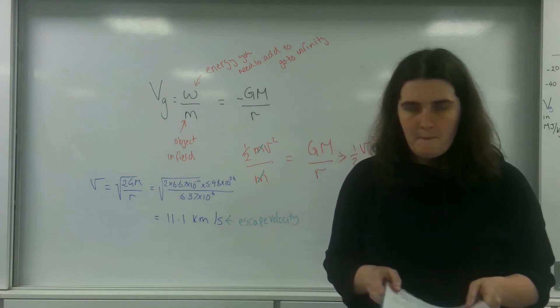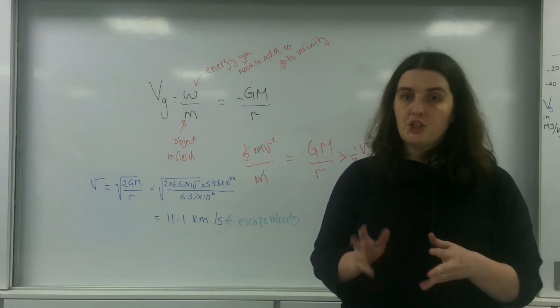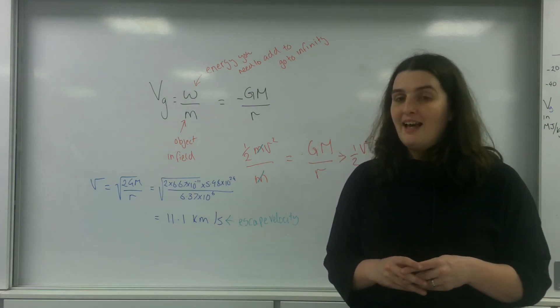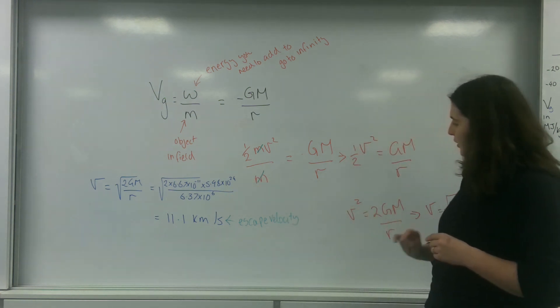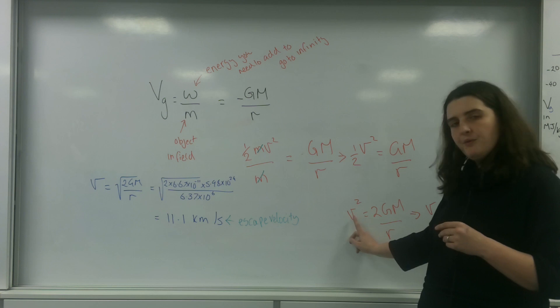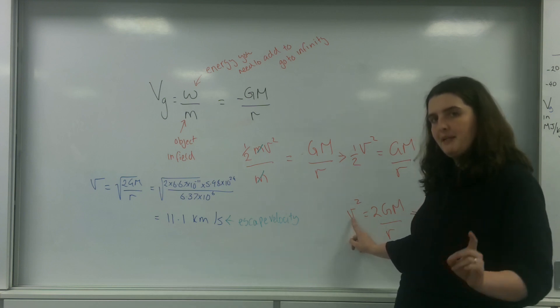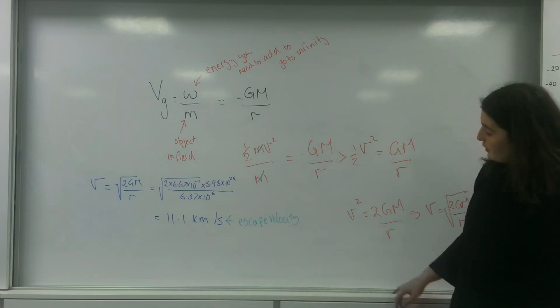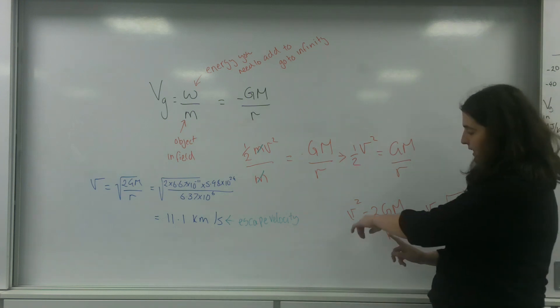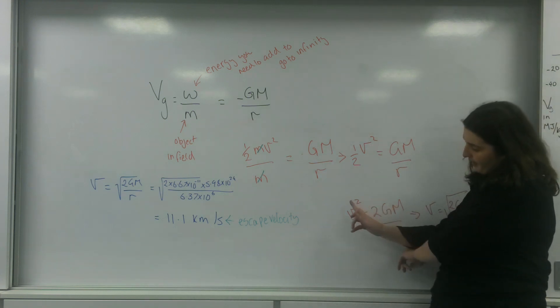Because Schwarzschild radius is this formula when the escape velocity is the speed of light, because you can't go faster than the speed of light.